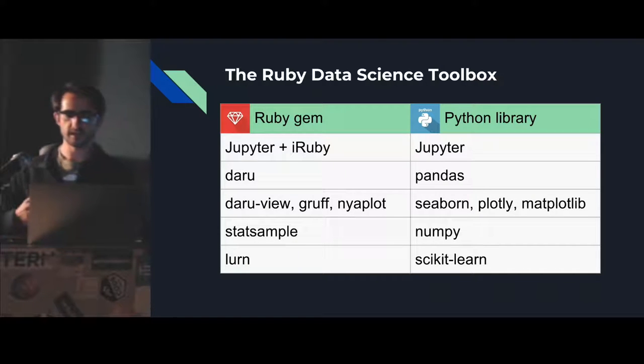So just a few examples. We can now kind of get into the actual data science toolbox in Ruby. And for those who are familiar with the tools in Python, we just have a brief conversion of like what the gem is in Ruby and what it approximately translates to in Python.